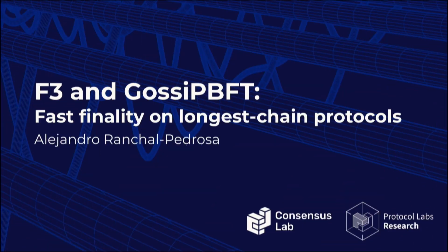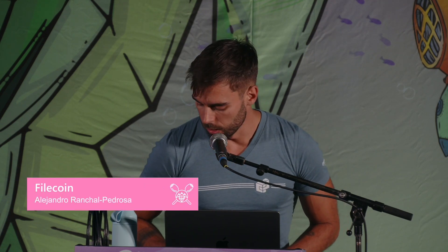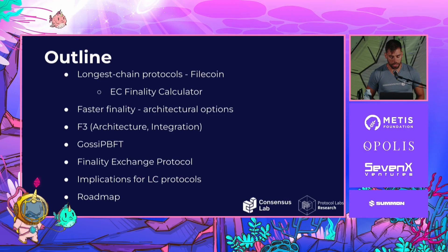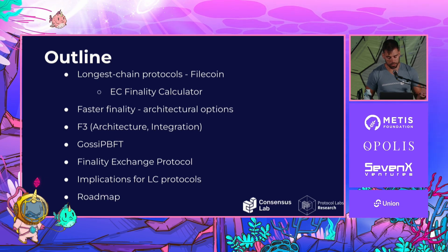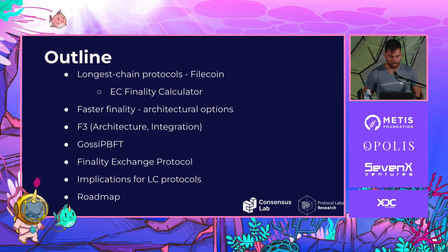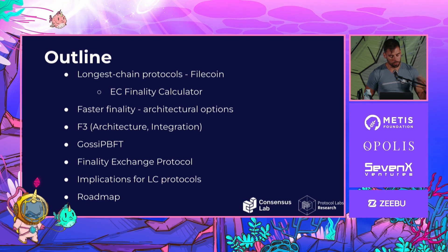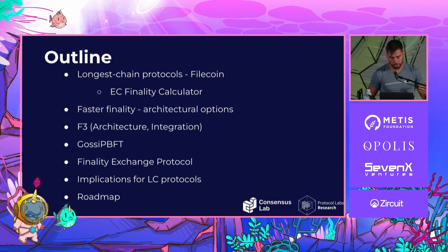I'm Alejandro Ranchal from Protocol Labs and I'm going to be talking about how to get fast finality on longest chain protocols. Here is the outline: first, the status quo of how longest chain protocols work, particularly for Filecoin; then our first take providing faster finality with the EC finality calculator; then we reached the lower bound of architectures that only have a longest chain protocol.